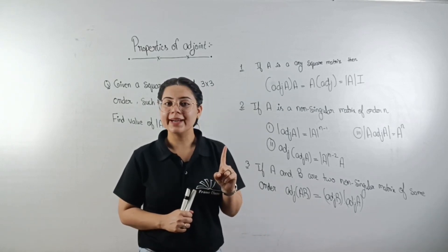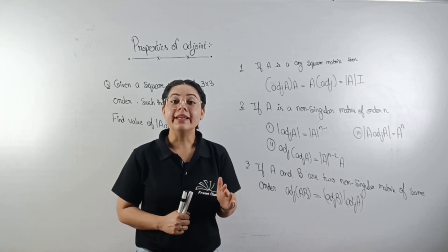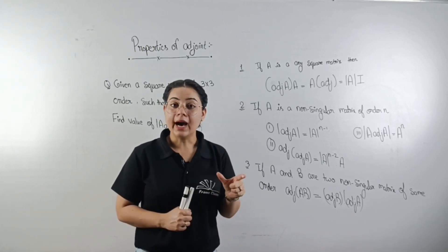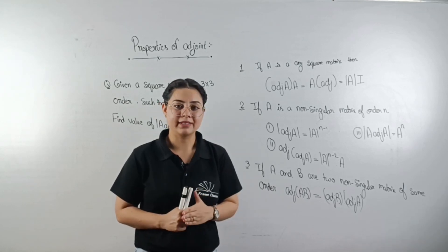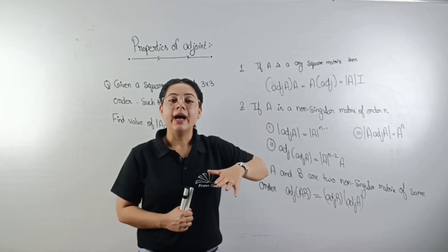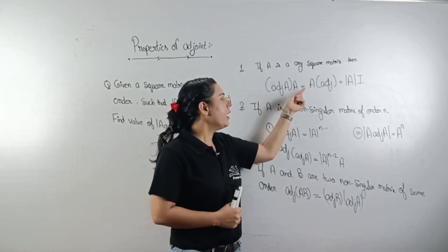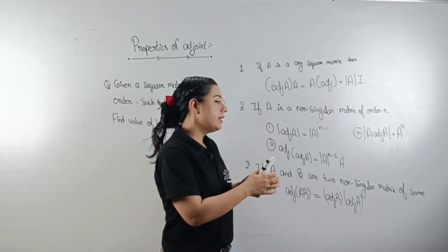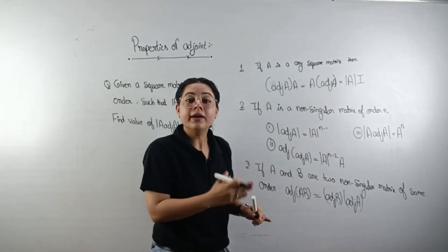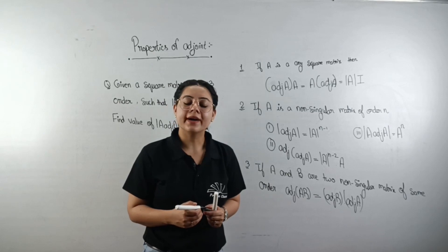What is the first property? If A is any square matrix, then the adjoint of A multiplied by A, that means adj(A) into A, or A into adj(A), is equal to |A| times the identity matrix. Here |A| means the determinant of our matrix.